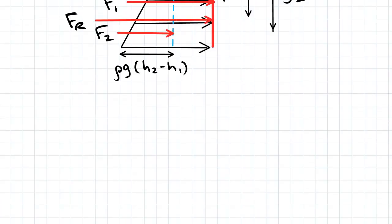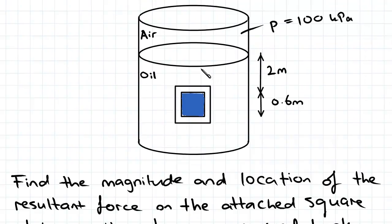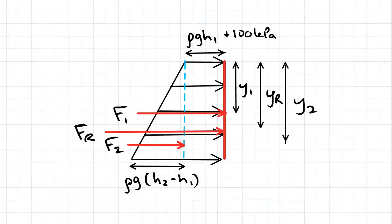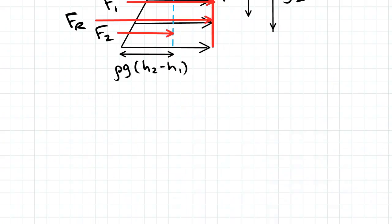We know that H1 is 2 meters, so 2 meters from the top of the fluid to the top of the square plate that we're considering. H2 is 2.6 meters because the square plate is 0.6 wide and high.